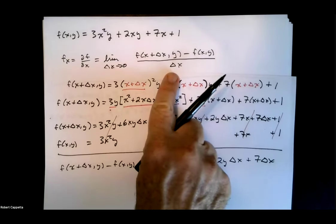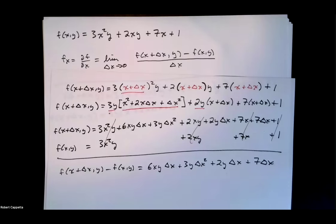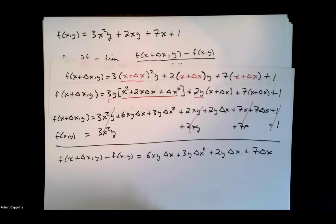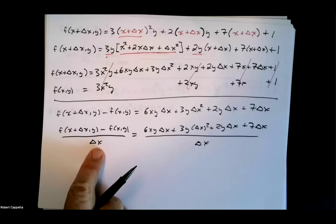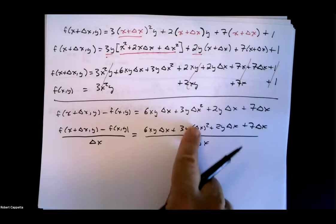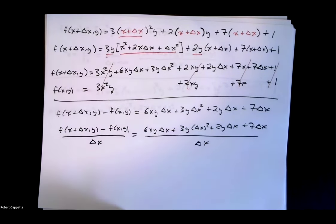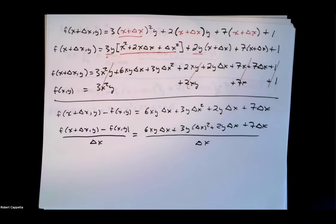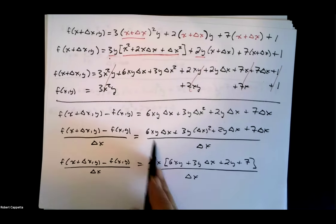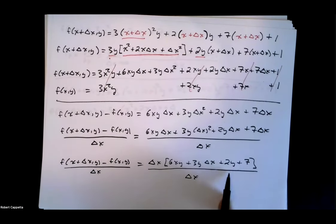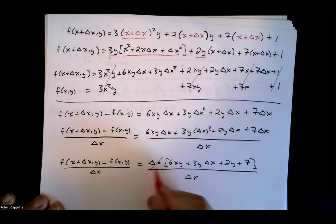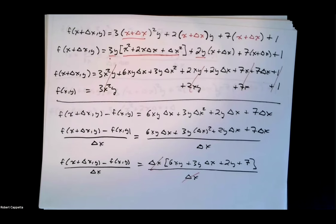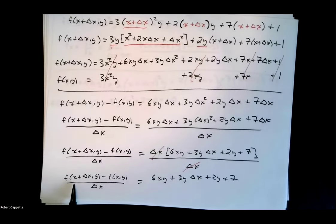Now we divide by delta x and eventually take a limit. Dividing the whole expression by delta x — note that delta x squared means change in x multiplied by change in x. Then we factor a delta x out of the four terms on top, giving 6xy plus 3y delta x plus 2y plus 7. The delta x's cancel, and we've simplified the fraction. So f of x plus delta x, y minus f of x, y over delta x equals 6xy plus 3y delta x plus 2y plus 7.